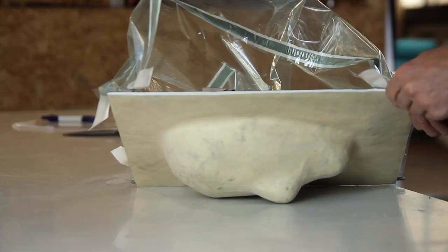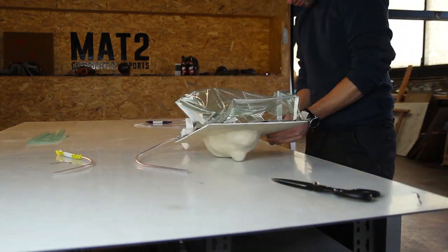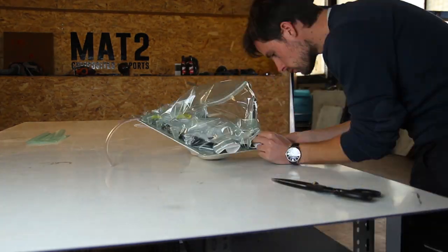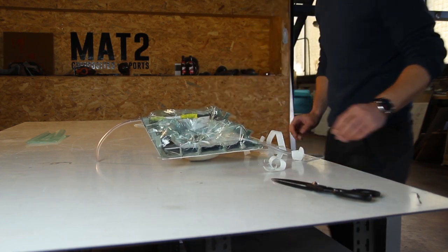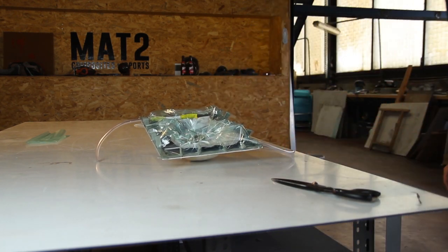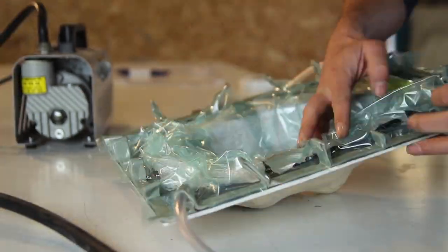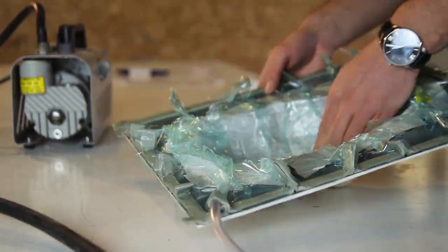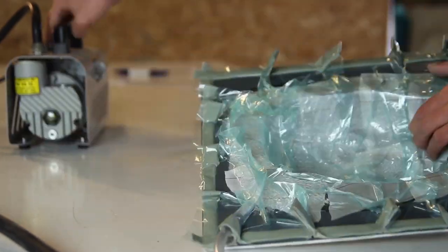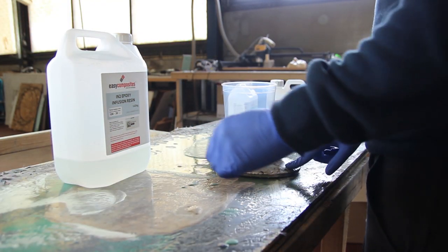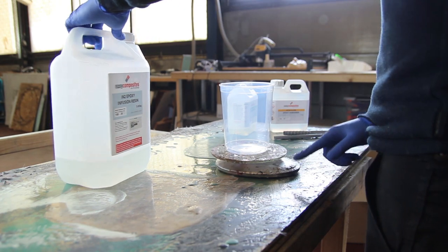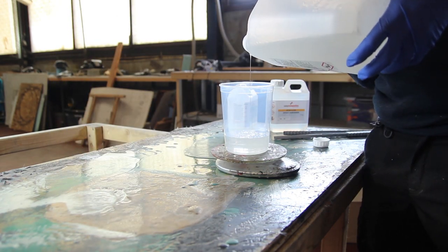So next step is adding the vacuum bag. So the vacuum bag is added with some tacky tape, then you have the resin infusion line and the vacuum line. So everything is sucked under vacuum just making sure there's no bridging. So bridging would mean that the vacuum bag is not fully against the carbon fiber and the mold.